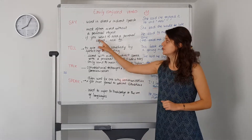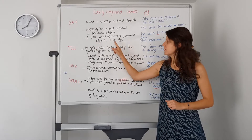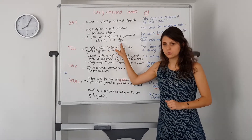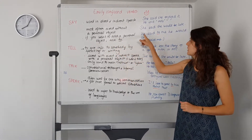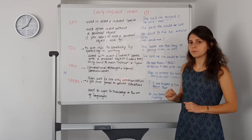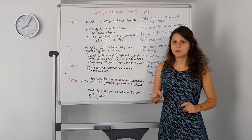If you want to add a personal object, then you have to use to after say. So for instance: he said to me he would come.